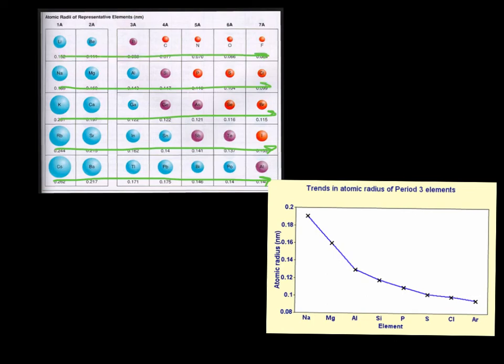So if we just looked at the third period elements, these guys right here, you can see again graphically that they're getting smaller. So you can look at them as sort of a picture of circles or as a graph.